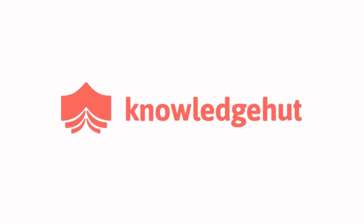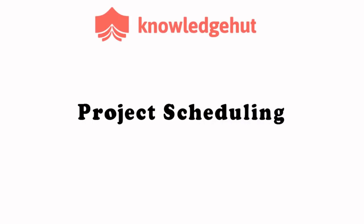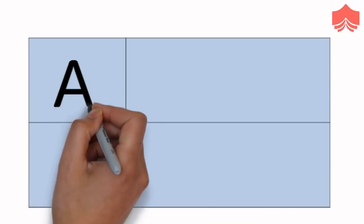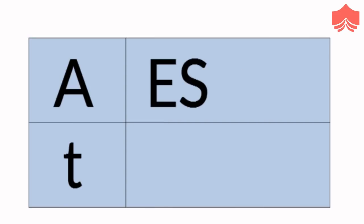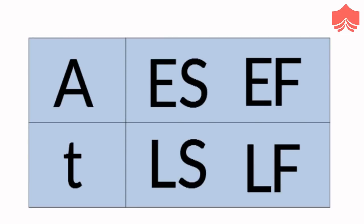Welcome to Knowledge Hut. In today's video we're going to learn some basics of project scheduling, including the determination of slack values and finding the critical path. We'll be dealing with the activities, the expected activity duration, earliest start time, earliest finish time, latest start time, and latest finish time in the whole operation.